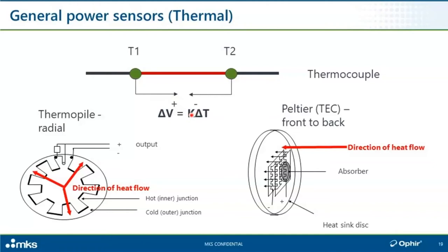There are two different configurations. Most of our sensors are based on a radial configuration where the beam is absorbed in the center, and we have a series of metal A, metal B junctions. The voltage produced is generally pretty small — a very small fraction of a microvolt or millivolt per watt of incoming power — so we have a whole bunch of these junctions. The laser beam gets absorbed on the back side; the resulting heat spreads radially outward, and the instrument measures the difference between the temperature of the inner, hotter circle and the outer, cooler circle.